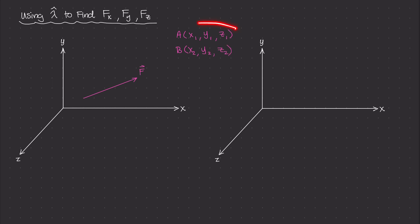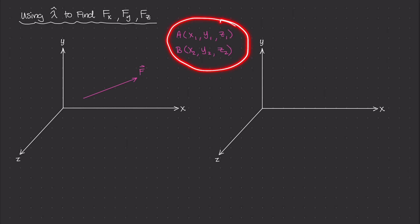To be clear, these two points in space do not necessarily have to be the start and end of the vector. They can simply be any two points along the same line of action of that force. These two points give us the orientation of the force, but the length of the force is already known — it's the magnitude of F. So if F is 250 newtons, then the length of this vector is 250.